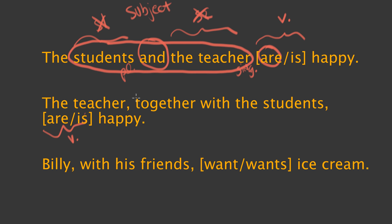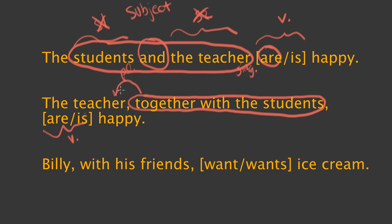If it's not a compound subject, then we must be dealing with something else — this becomes a regular subject-verb relationship. 'Together with the students' is actually a modifier. You can tell it's a modifier because it answers the question: which teacher? The teacher together with the students — it's telling us information about the teacher. So that's a modifier, and we're going to ignore it. Our true subject is 'teacher,' which is singular, so 'is' will be the correct verb. 'The teacher is happy' — together with the students is simply a modifier for teacher.